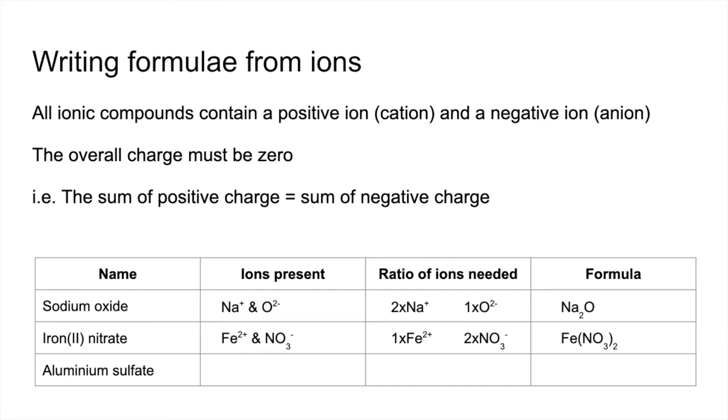And then finally, aluminium sulfate. So the ions present are Al3 plus, SO4, 2 minus. Again, a 1 to 1 ratio is not going to work. So we need to get the charges up to 6 plus and 6 minus before they equal each other. And therefore, we need two aluminium 3 plus ions and three sulfate ions. And so the formula of that would be written like this.